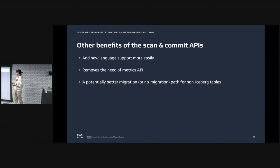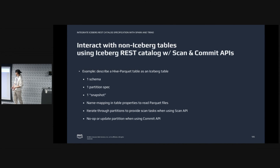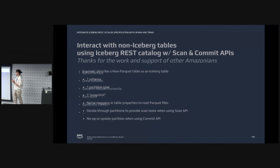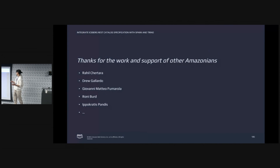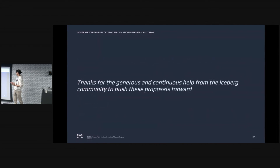There's also a very interesting use case for table migration — or rather no migration — because with these APIs you can actually express non-Iceberg tables as Iceberg tables. Take a Hive partitioned table example: I can say this is an Iceberg table with one schema, one partition spec, a fake snapshot, and some column name mappings. If you read and write through the scan commit API, the user won't even know they are interacting with a Hive table until they do more advanced operations, at which point the service will fail them. So it opens up interesting use cases for further discussion. In closing, I'd like to thank everyone who has been working on this and pushing the progress in open source, and thank the Iceberg community for helping us push these proposals forward. Thank you.